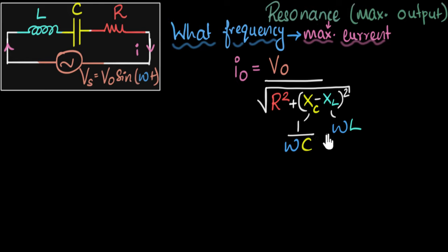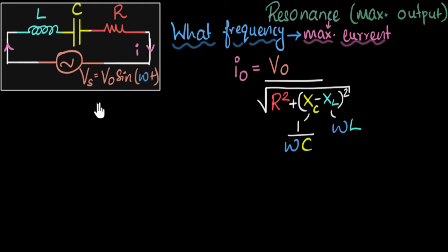We've talked about all this in previous videos, so feel free to go back and check those out. Now, if you look at this expression, you see that the value of the current not only depends on the voltage, resistors, inductor, or capacitor, but it also depends on the frequency of the input supply. That's really the speciality of alternating circuits. In direct current circuits, the only way to change current would be by changing the voltage or the components. But in this alternating circuit, even if we keep voltage, L, and C the same, just by changing the frequency at which the voltage alternates, I can change how much current I'm getting.